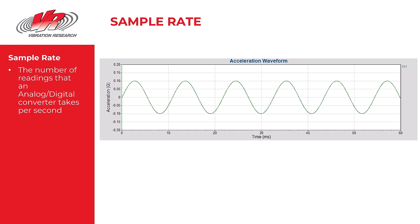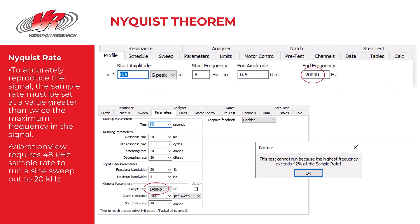There is a rule of thumb that the sample rate must be greater than twice the max frequency of interest. This rule is called the Nyquist rule or the Nyquist theorem.